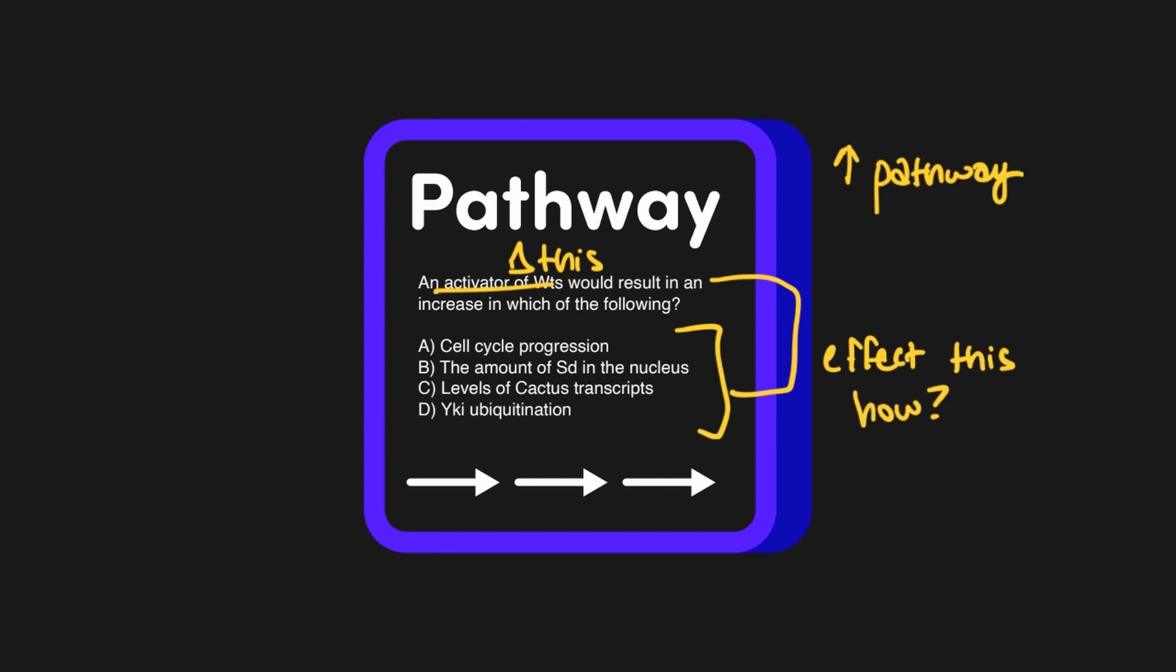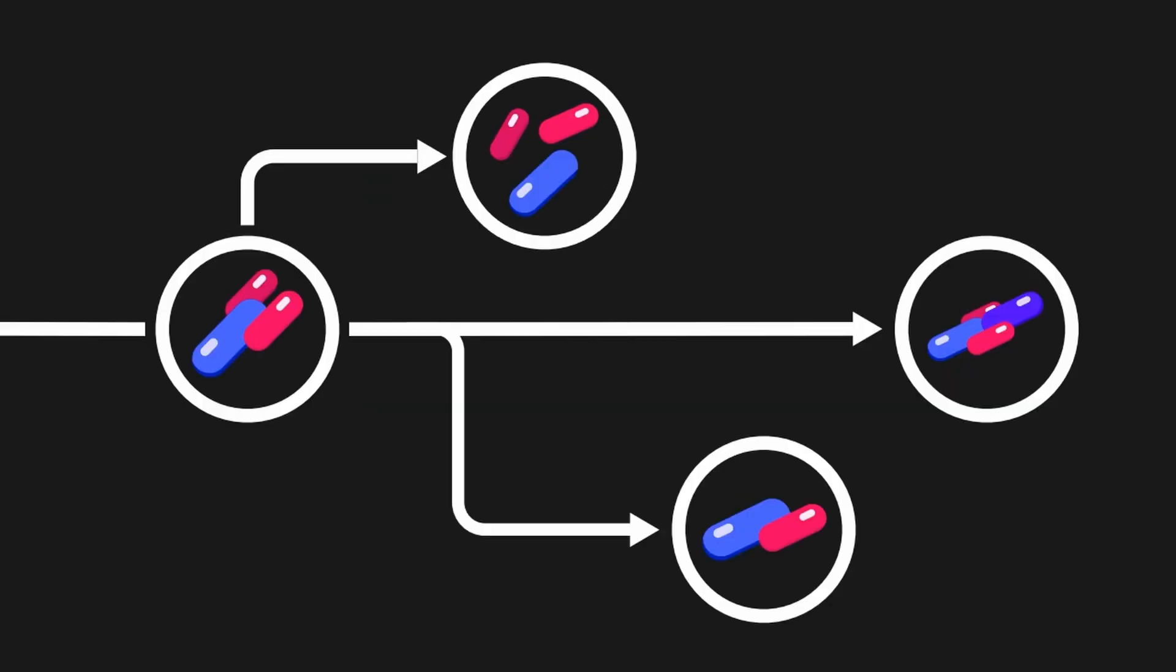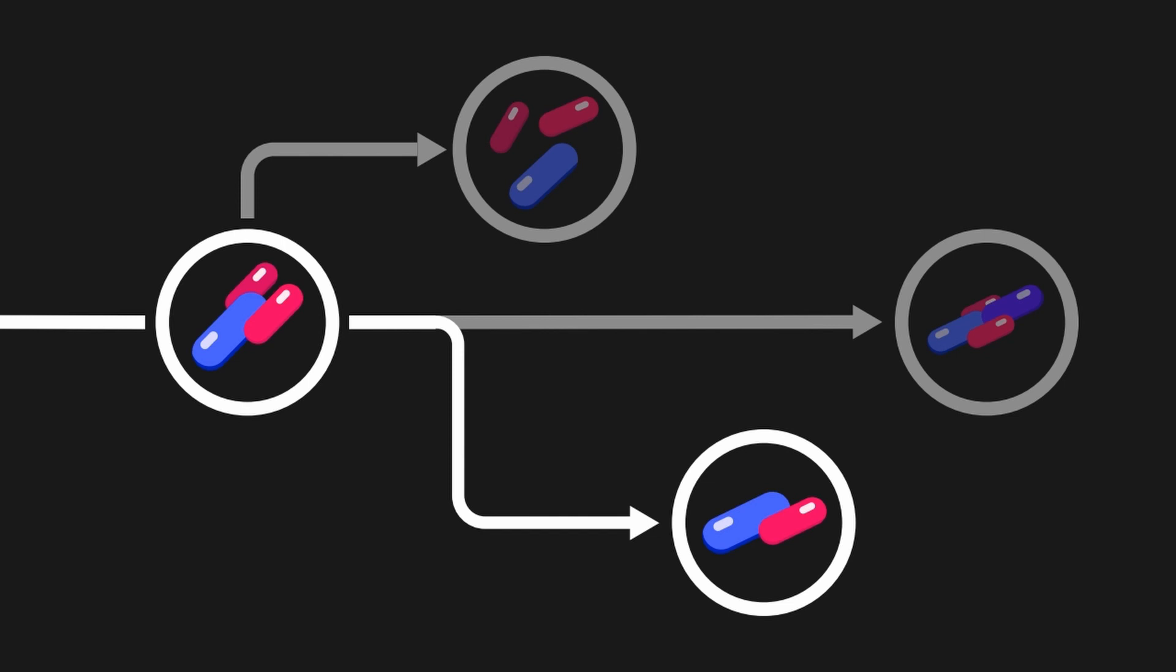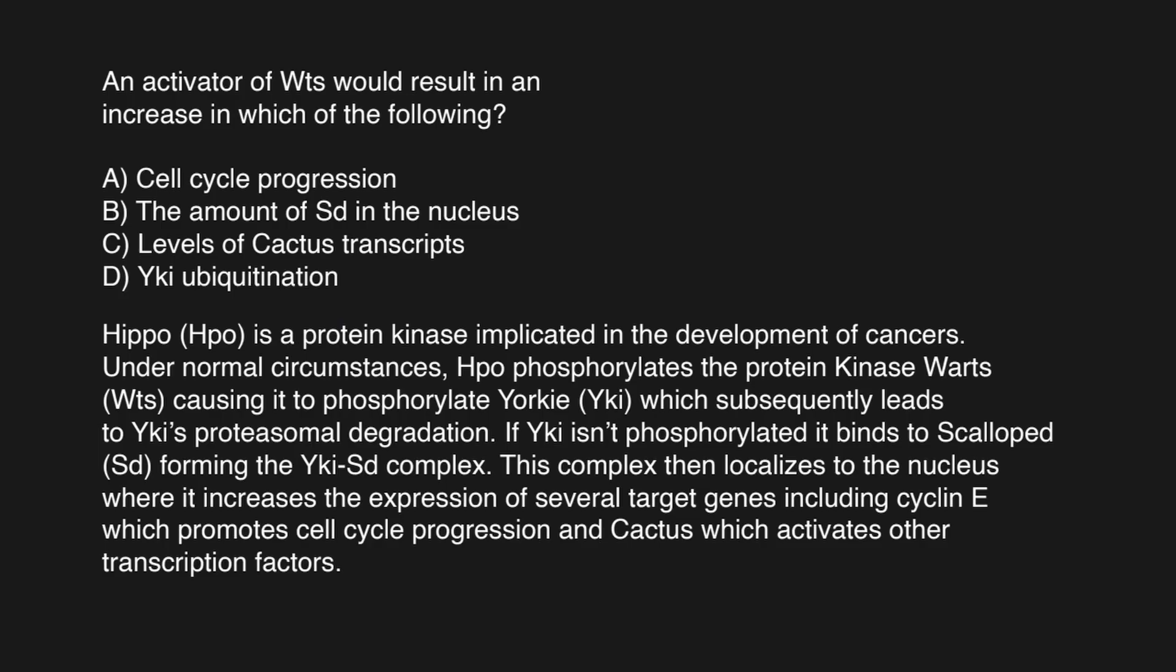When it comes to charting the passage, we could scattershot and chart absolutely everything out, but this really isn't that efficient. Instead, we're going to focus on the things that were mentioned in the answer or the question stem itself, rather than charting out the entire pathway. So in this particular question, we want to make sure that we include WTS, cell cycle progression, SD, cactus, and YKI, and figure out what the heck is going on with that ubiquination piece.